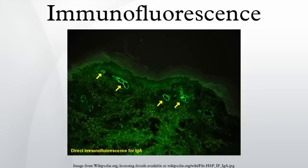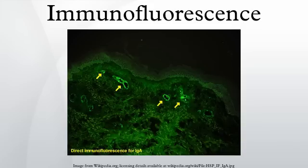Direct immunofluorescence, although somewhat less common, has notable advantages over the secondary procedure. The direct attachment of the fluorophore to the antibody reduces the number of steps in the procedure, saving time and reducing non-specific background signal. This also limits the possibility of antibody cross-reactivity and possible mistakes throughout the process. However, since the number of fluorescent molecules that can be bound to the primary antibody is limited, direct immunofluorescence is substantially less sensitive than indirect immunofluorescence and may result in false negatives. Direct immunofluorescence also requires the use of much more primary antibody, which is extremely expensive, sometimes running up to $400 per milliliter.